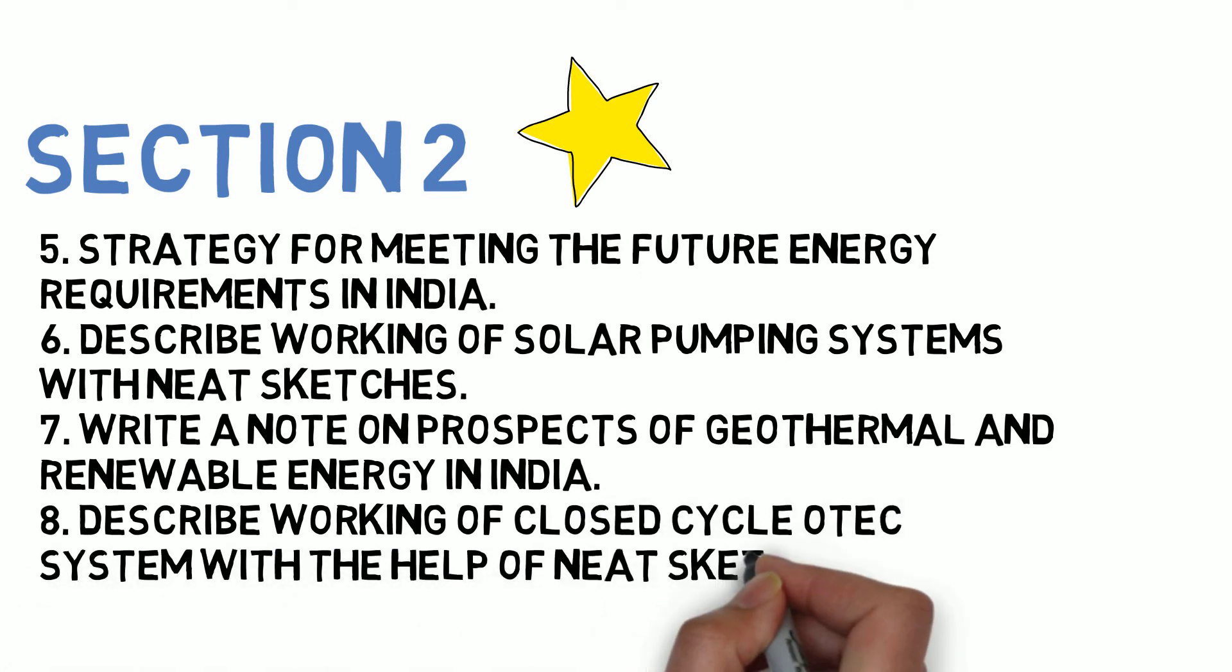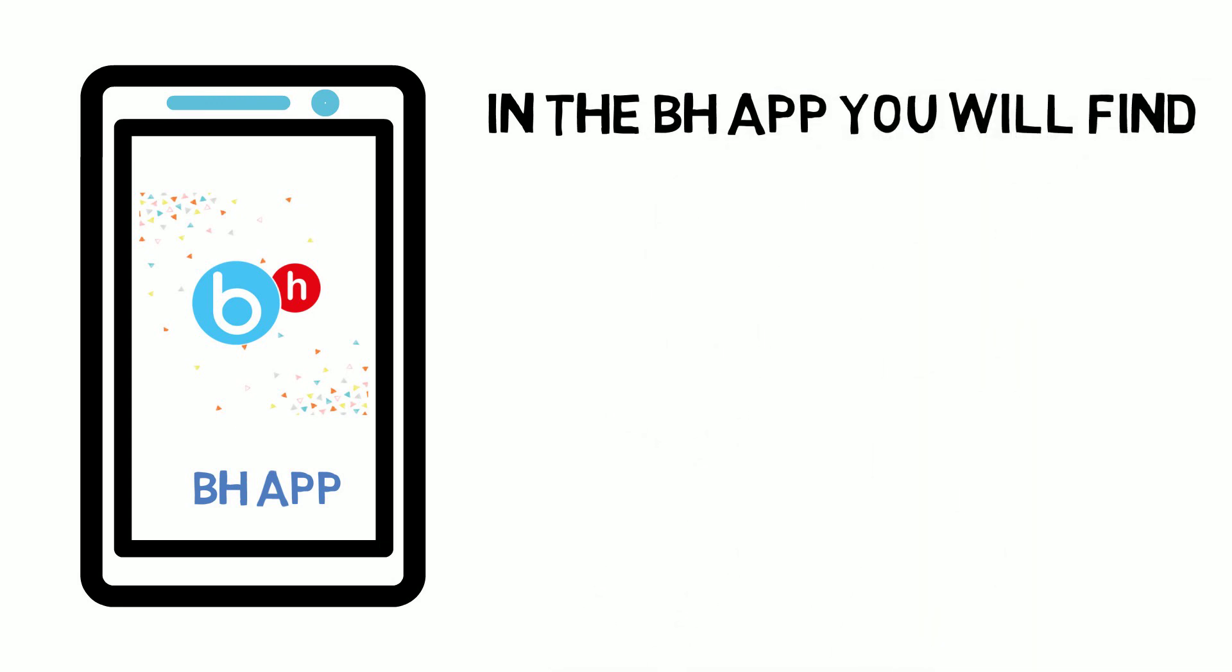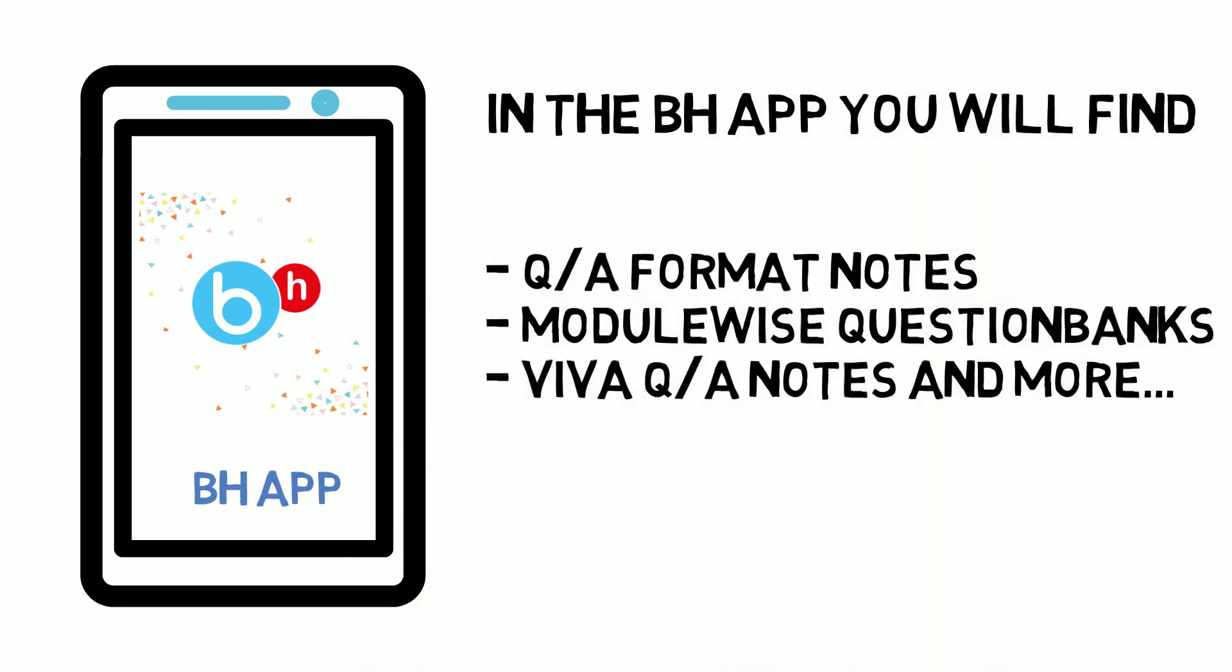So guys, these are the eight questions you have to go on a priority basis. The answers are available in the BH notes, so make sure you check it. There are more questions available as well, so if you need them you can surely download the BrainHeaters app and go ahead with your preparation.